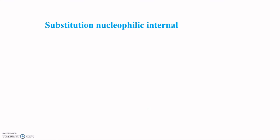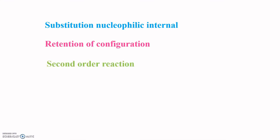To summarize the SNI mechanism: it is a nucleophilic substitution happening internally, giving retention of configuration — the product and reactant have the same configuration. It is a second-order reaction, with the rate depending on both the alcohol and thionyl chloride (or phosgene).